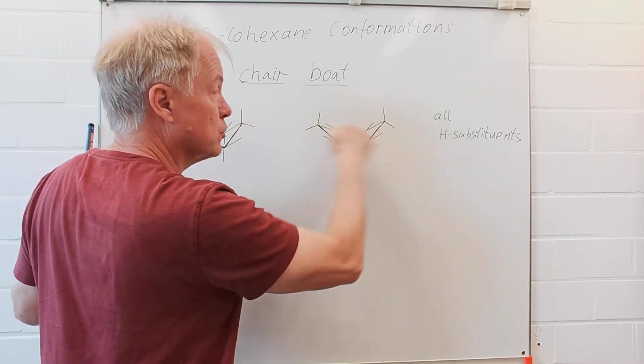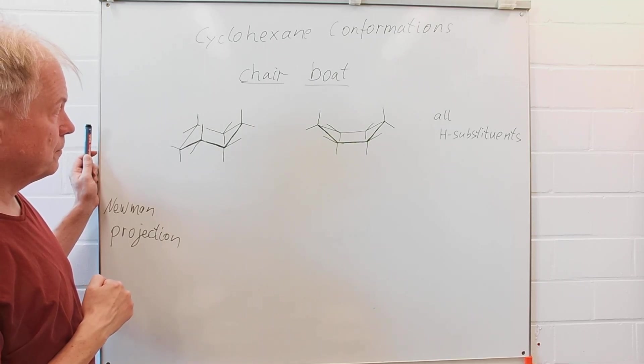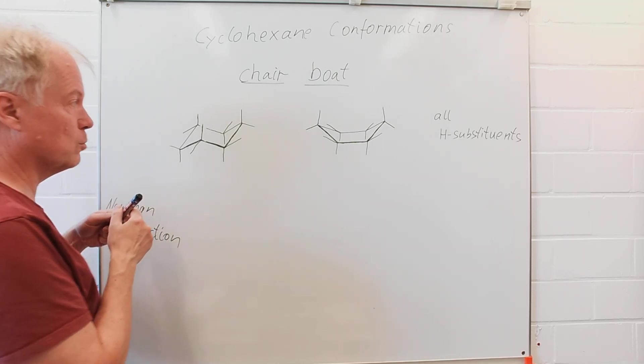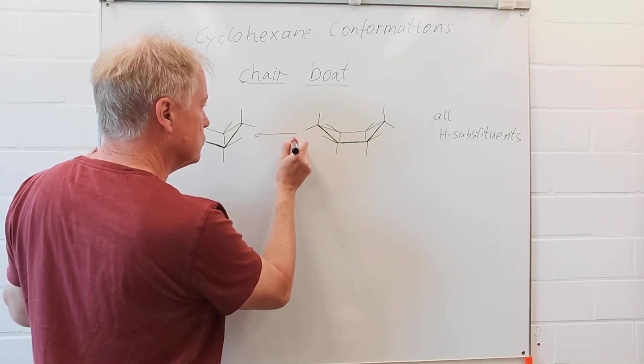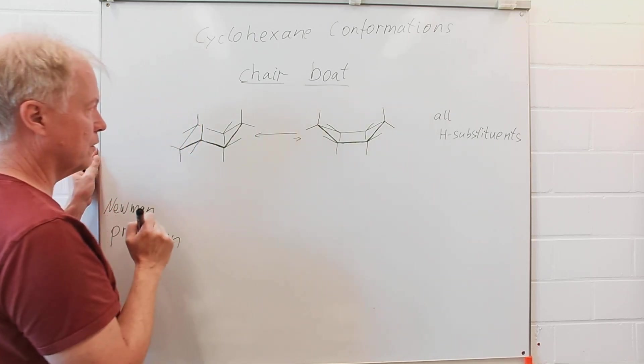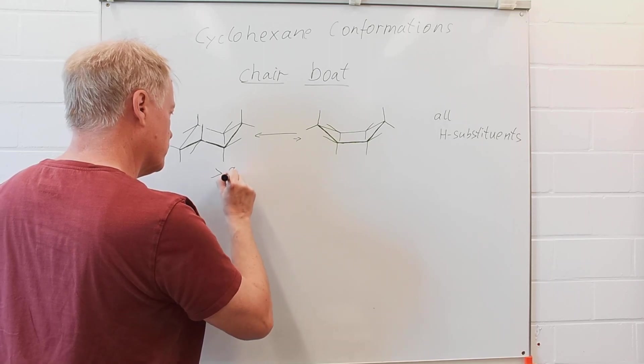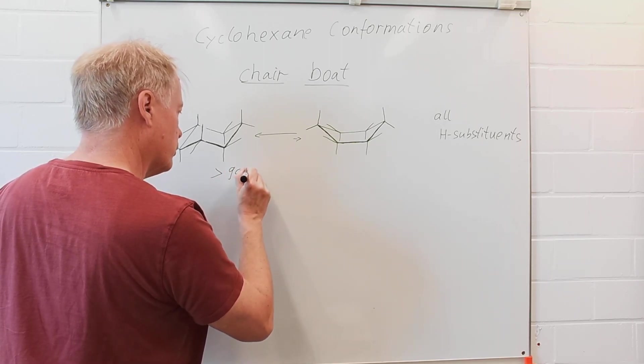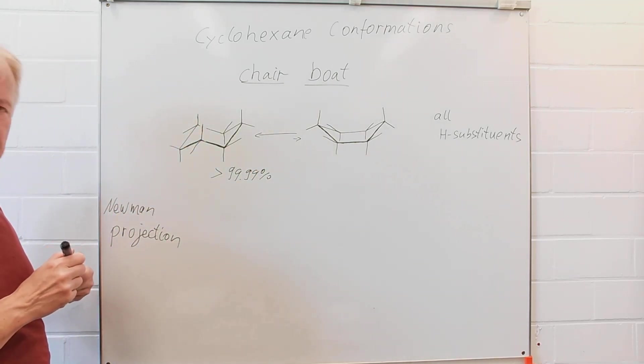Of course all those substituents are just hydrogen substituents. The chair conformation is by far a more stable one. There is an equilibrium between those two, but the chair conformation is preferred with more than 99.99%. Why is this the case?